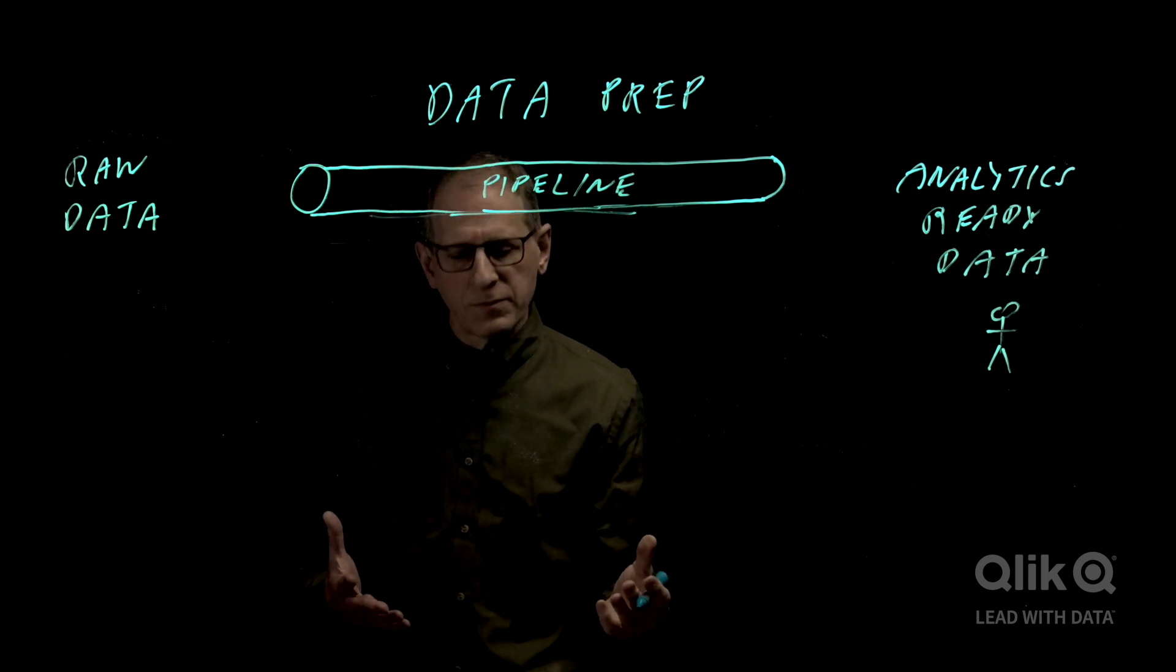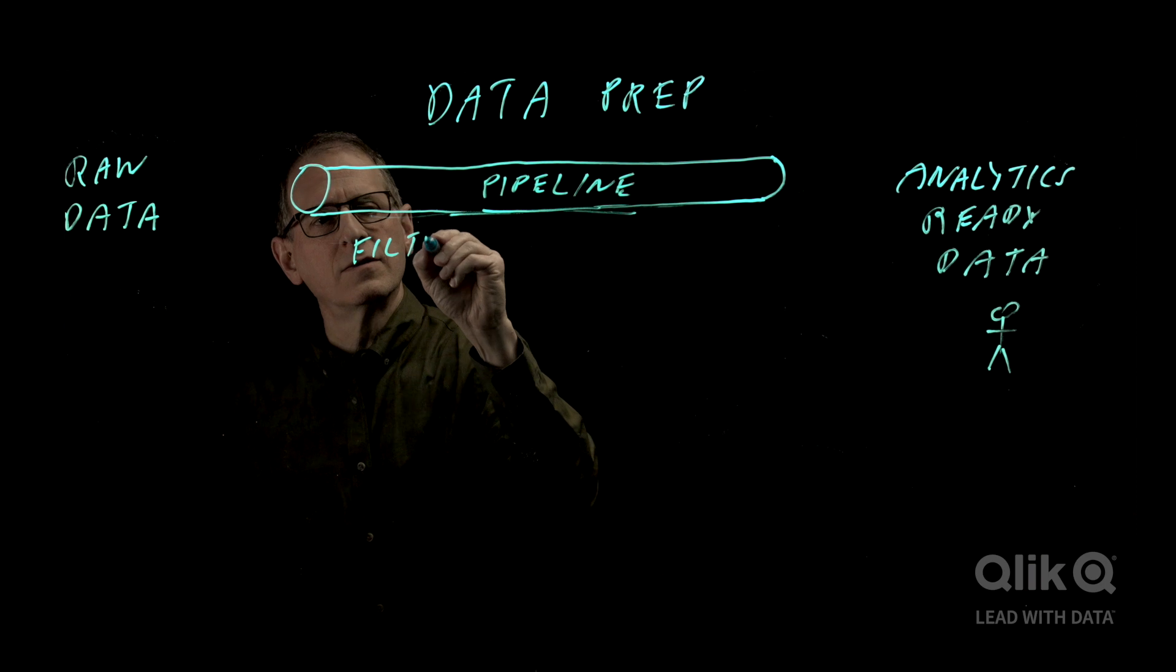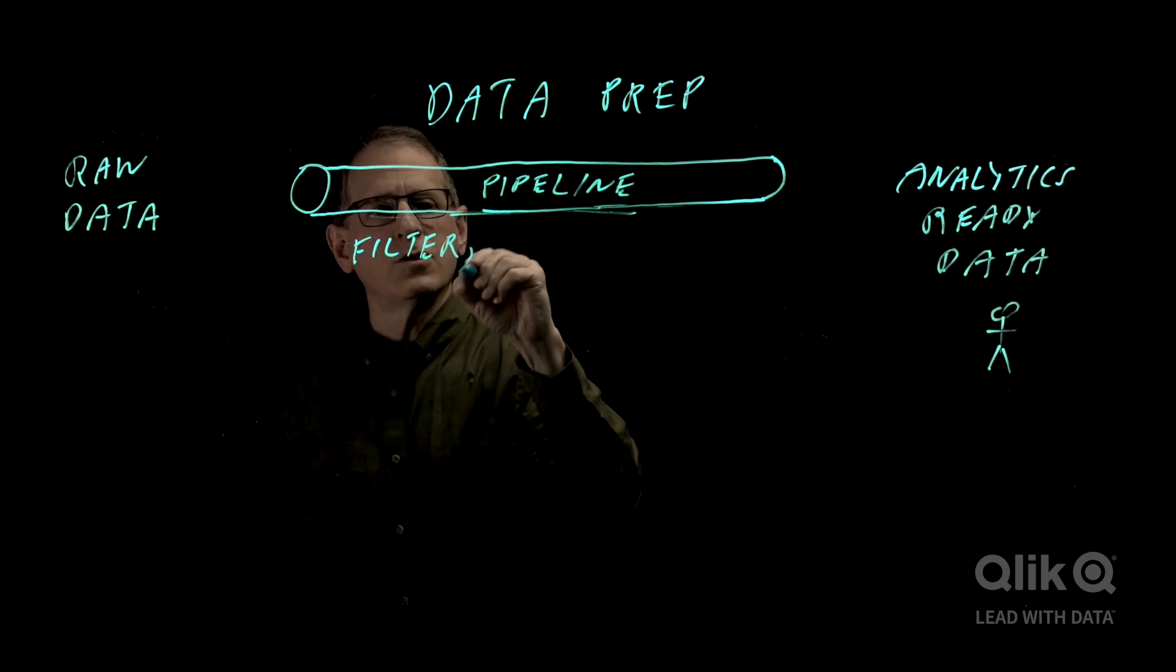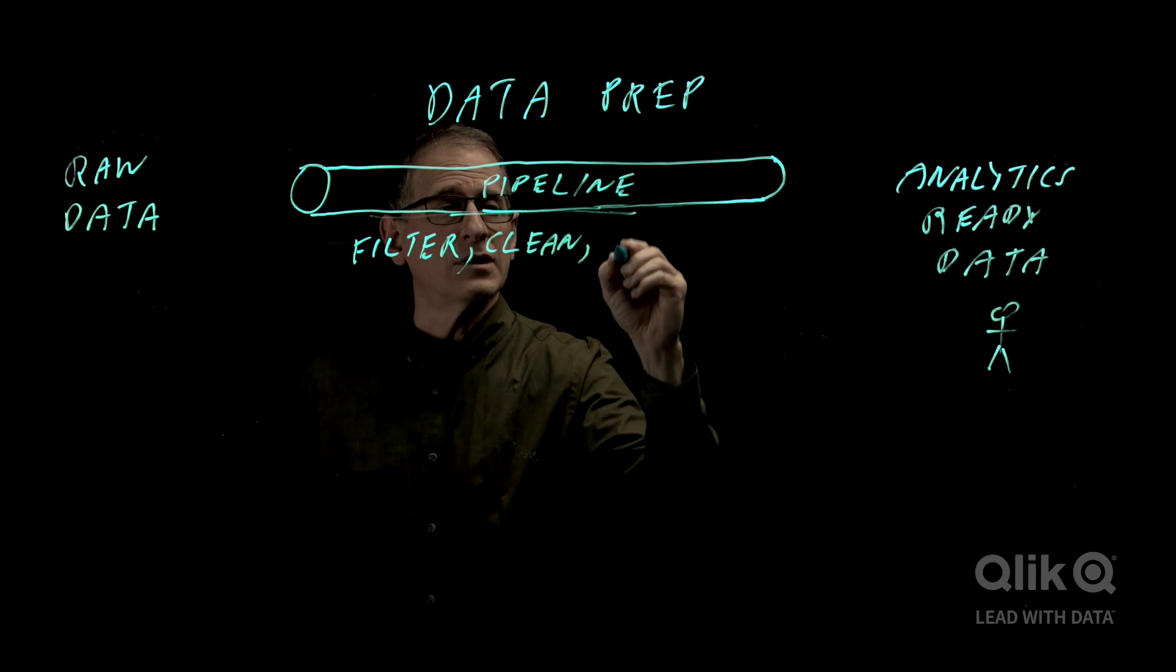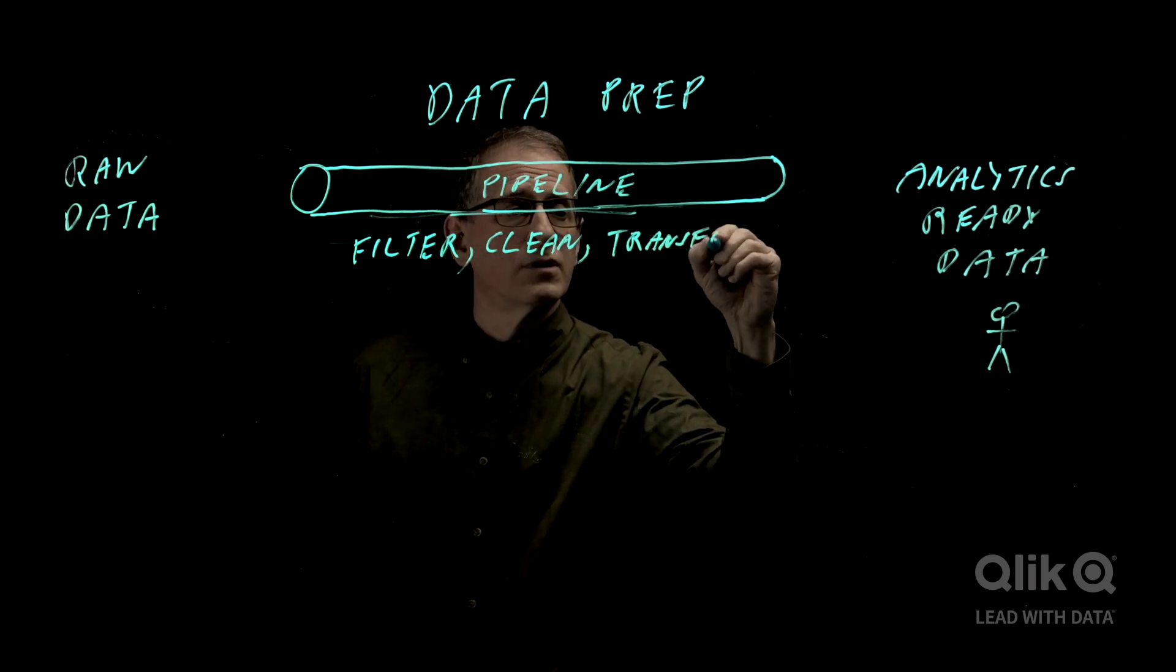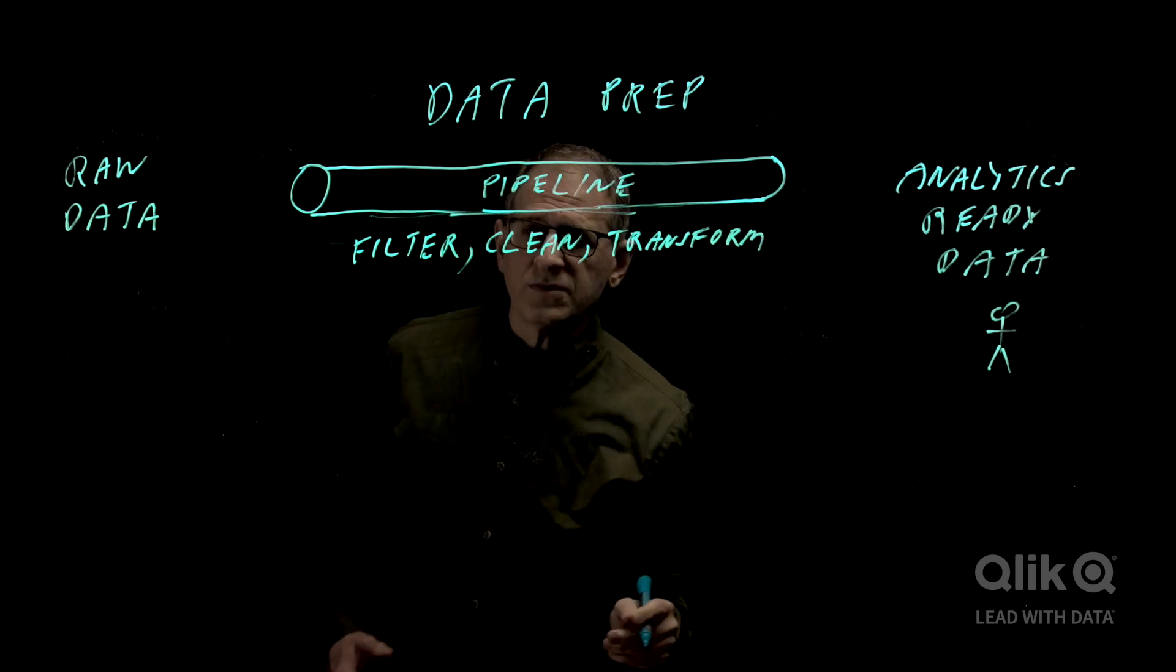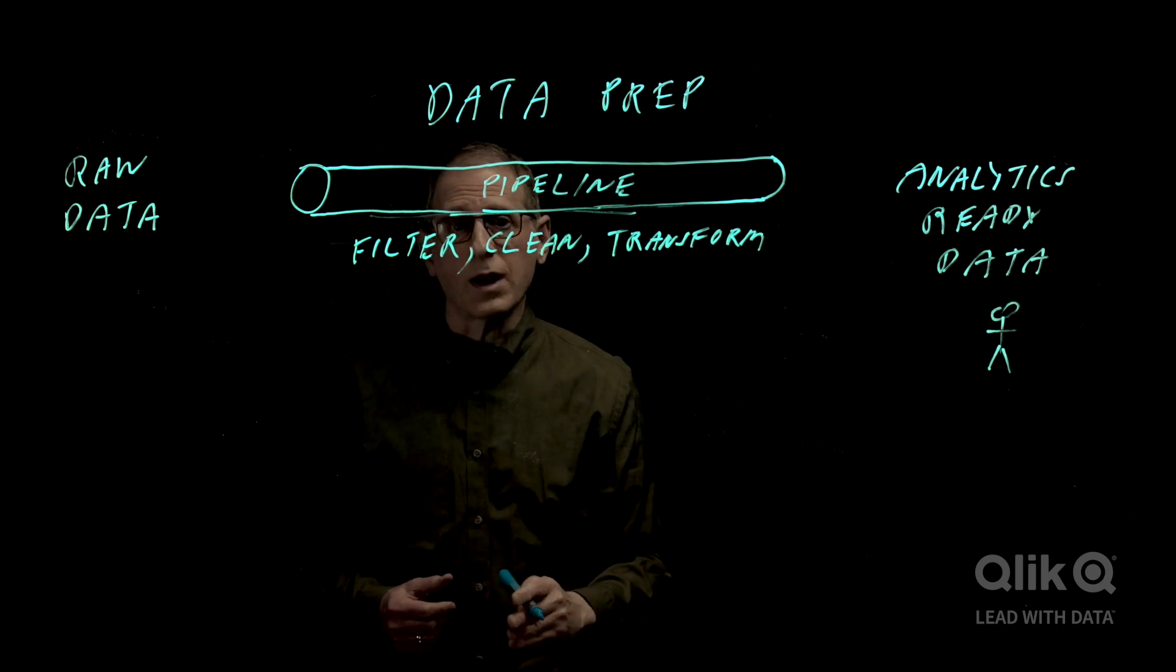Now what are you doing within this pipeline? You're doing things like perhaps filtering the data, cleaning the data. There's essentially dirty data you're wanting to clean. You're transforming the data. These are just a few examples of what we mean by what's happening in the pipeline, and these are all examples of data prep.